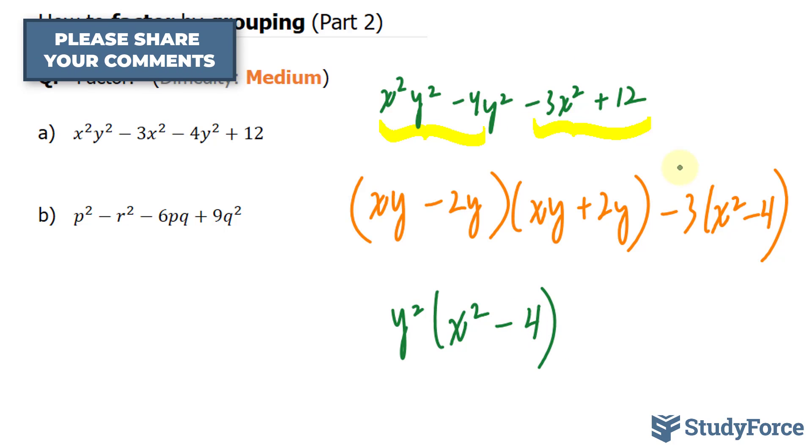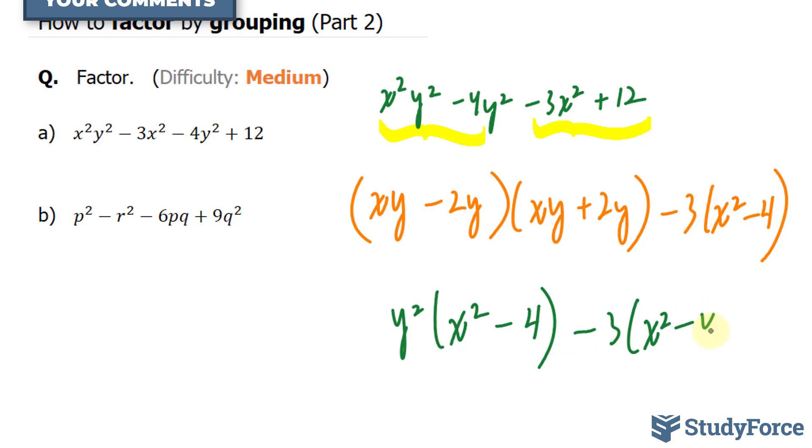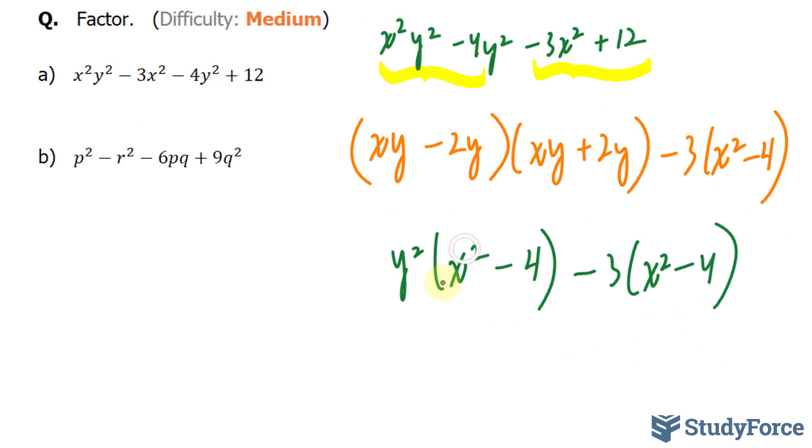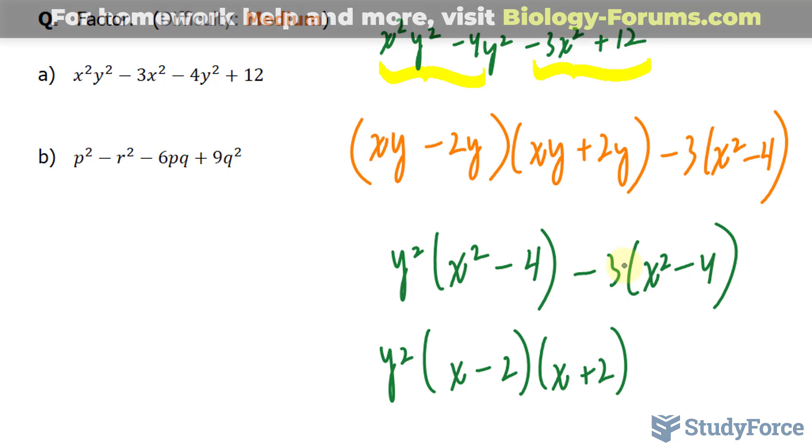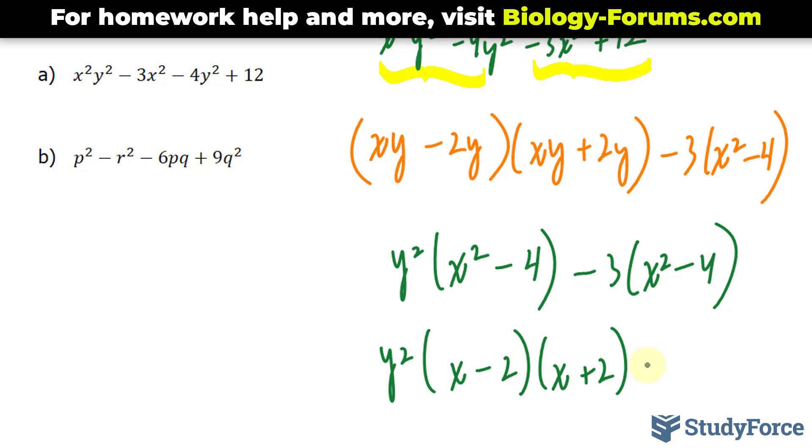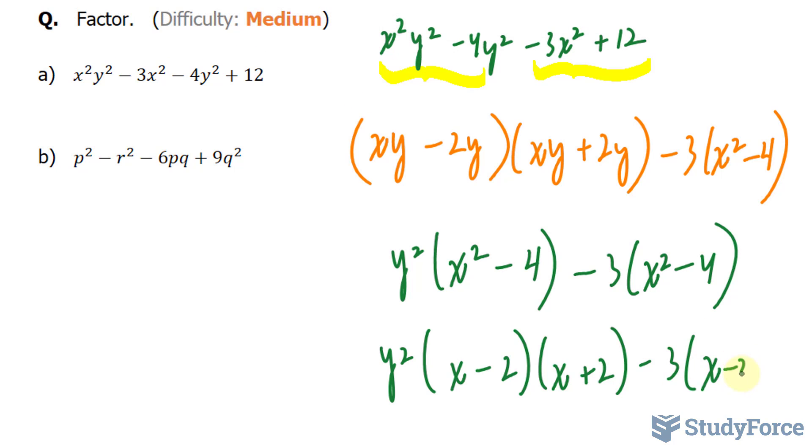And for these two terms, the same thing, minus 3 times x squared minus 4. I noticed that this factor was the difference of squares, where we have y squared bracket x minus 2, x plus 2. And the same thing here, where I have minus 3 times x minus 2, x plus 2.